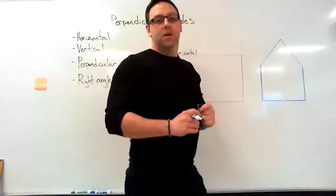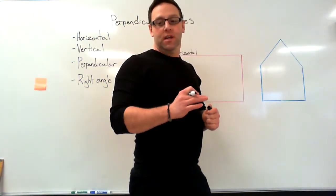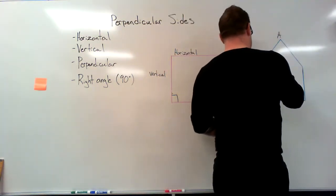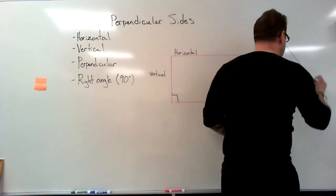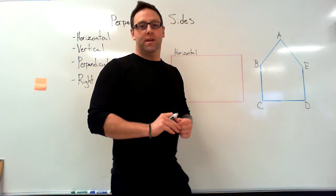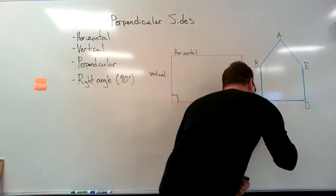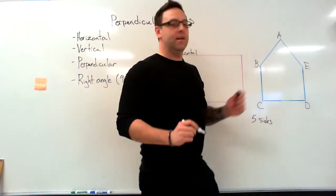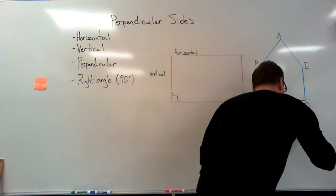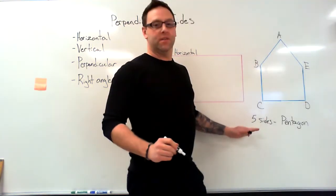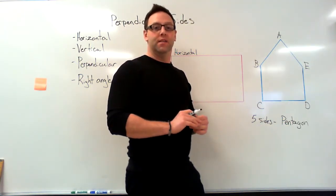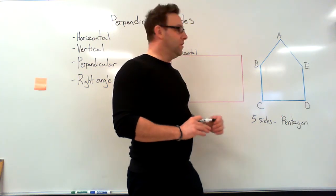Now let's look at a different shape. Last time we talked about naming our shapes using letters. I'm going to name this shape using A, B, C, D, and E. If we're going to talk about this shape, we can say that it has five sides — we also call that a pentagon.